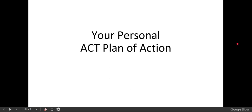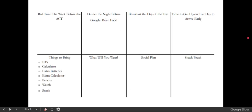Okay, let's talk about your ACT personal plan of action. If you have your handout, we're going to go over this side first. If not, you can just copy down these columns on a sheet of paper. You want to articulate what your plan is so you don't leave anything up in the air.